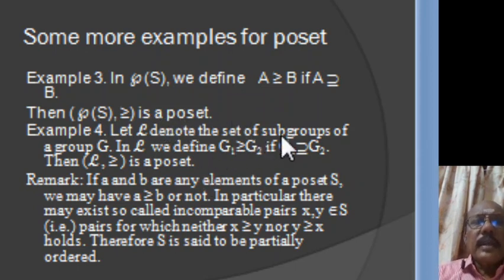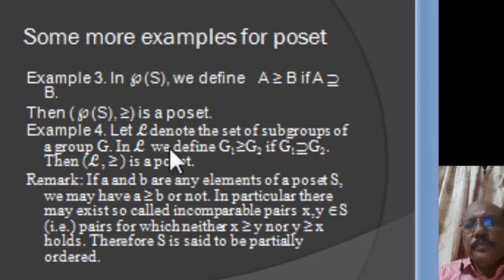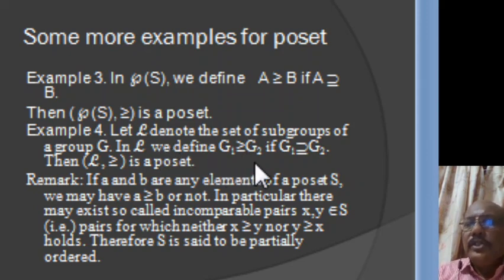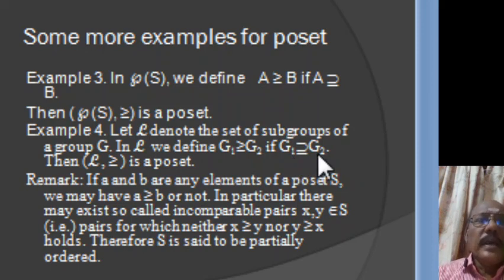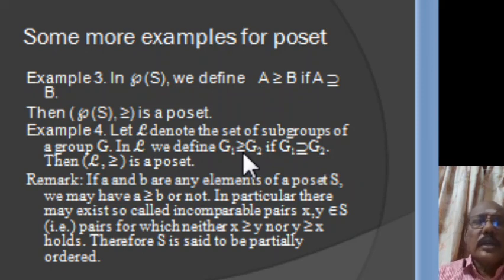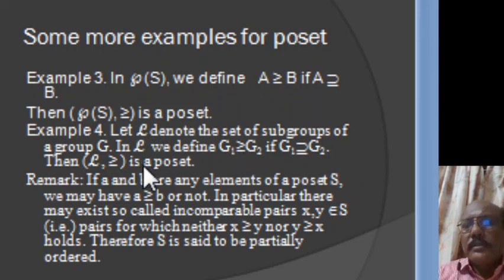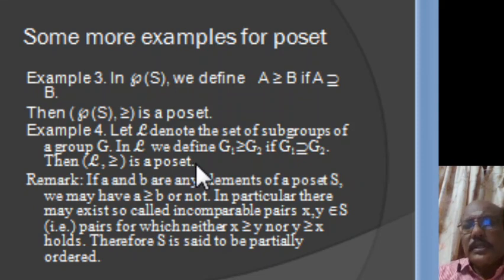If L is the set of all subgroups of a group G, then in L we define G1 ≥ G2 if G1 contains G2. As in the previous example, this ≥ is also a partial ordering relation. So (L, ≥) is a poset.